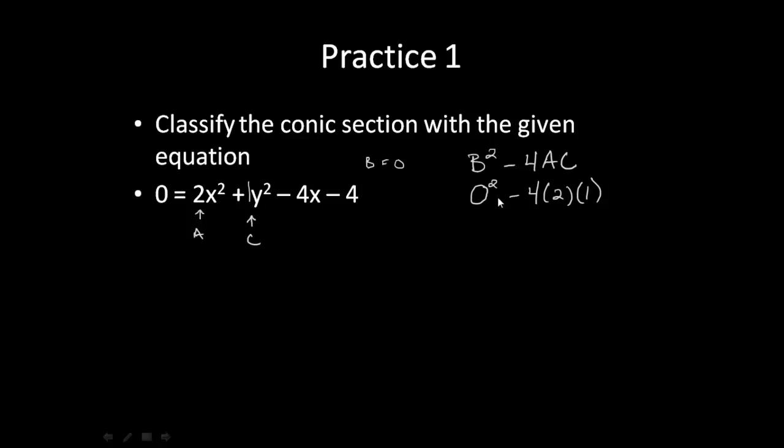So when I calculate this out, 0 squared is 0 minus 4 times 2 times 1 is 8. So I get negative 8. So that takes me down to my two options. My discriminant is less than 0. So that means I have two options. I could be a circle or I could be an ellipse.